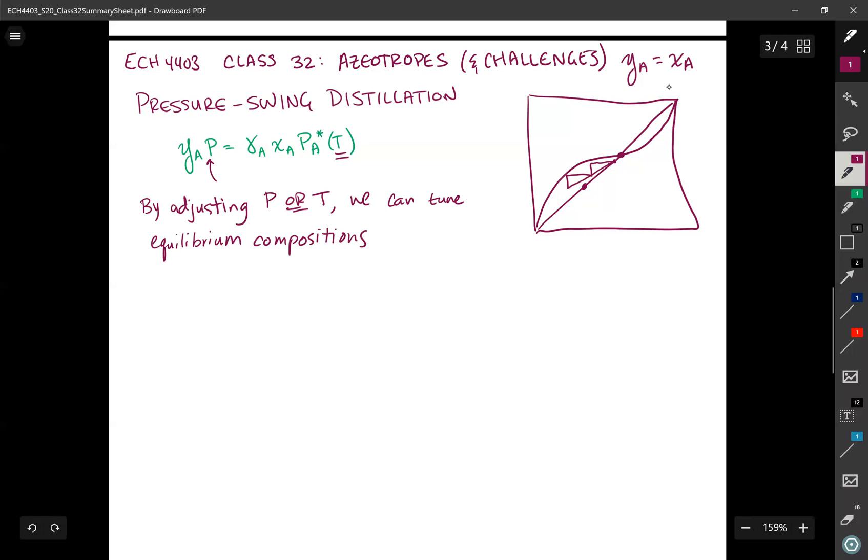The idea is by changing pressure, we can change the location of this azeotrope. For the same equilibrium data diagram, if this purple line is what the equilibrium data looks like at P1, and I change the pressure, I might get something that looks like the green line. The green line would be at the second pressure, and as you can see, the azeotropic composition changes.